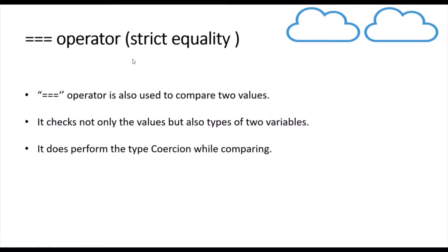Next we have the triple equals to operator, also called the strict equality operator, because along with comparing value, it also checks whether the operands have the same data type. Only if both the value and the data type match will it return true, otherwise it returns false. It does not perform type coercion while comparing operands.